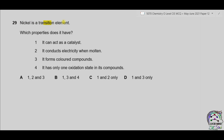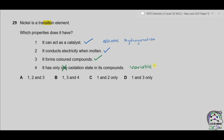Question 29. Nickel is a transition element. Which properties does it have? Statement 1: it can act as a catalyst — true, transition metals can be catalysts, and nickel is used in the hydrogenation of alkenes. Statement 2: it conducts electricity when molten — true, nickel is a metal and metals conduct in solid and molten states. Statement 3: it forms colored compounds — true, this is a property of transition metals. Statement 4: it has only one oxidation state — false, transition elements have variable oxidation states. As the first three statements are correct, the answer is A.